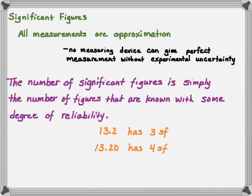If I have a number 13.2, I'm telling you that three numbers are significant — the 1, the 3, and the 2. If I write 13.20, I'm telling you that I have four significant figures because now the 1, the 3, the 2, and the 0 are significant.